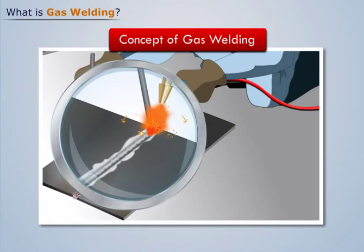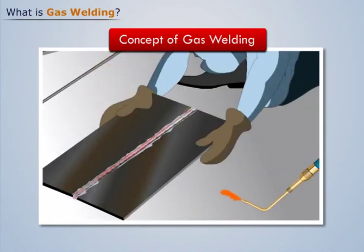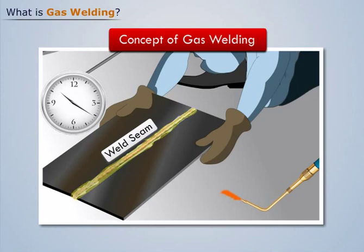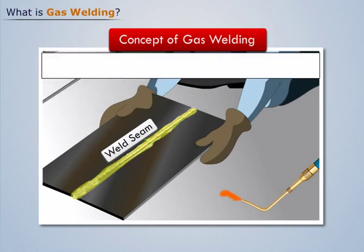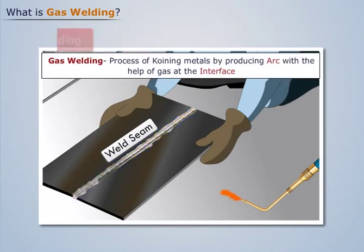Now let's remove the torch and filler rod away from the plates. After some time, we see that the weld solidifies and a permanent joint is obtained, known as a weld seam. This process of joining two metal pieces is called gas welding.